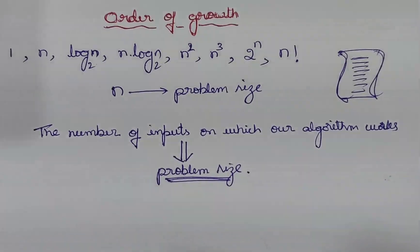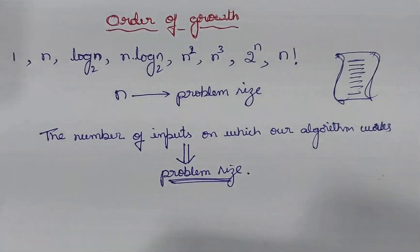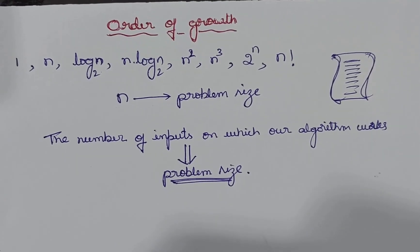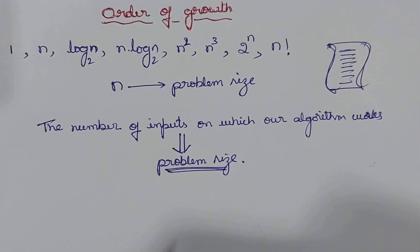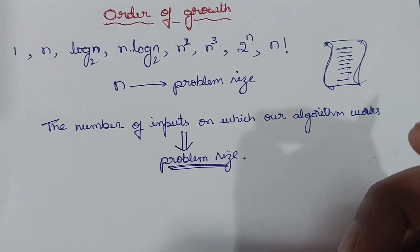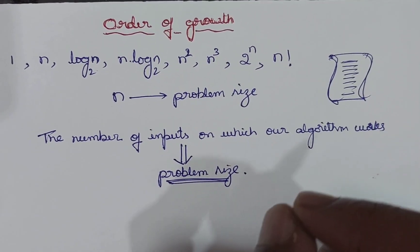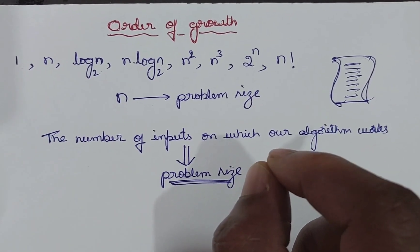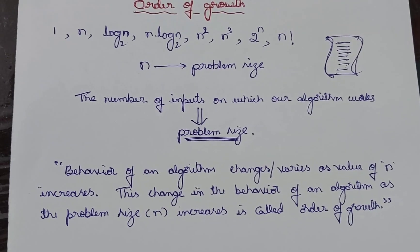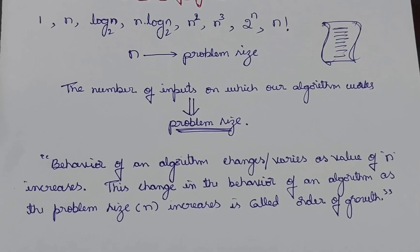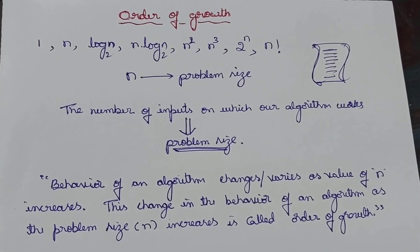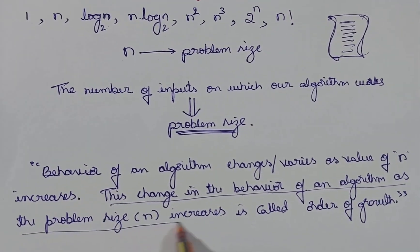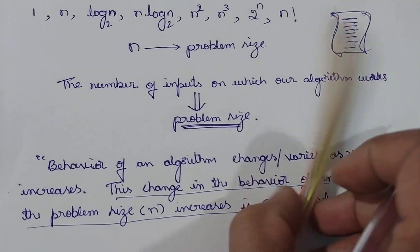As the number of inputs increases, the time taken by the program also increases. The question is: in what order does the behavior of our algorithm change as we increase the problem size? The process of studying the change in the behavior of an algorithm as we increase the problem size is called order of growth. So the behavior of an algorithm varies as the value of n increases, and this change in behavior as problem size increases is called order of growth.